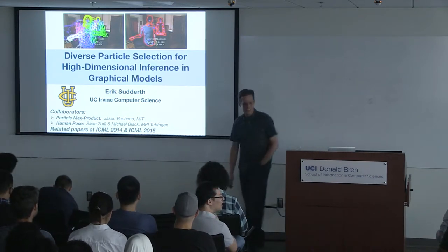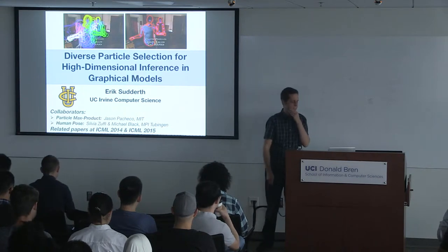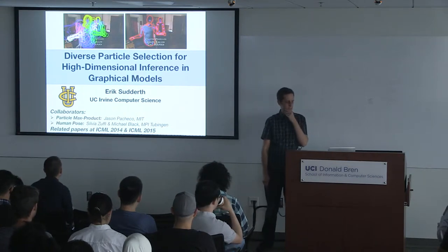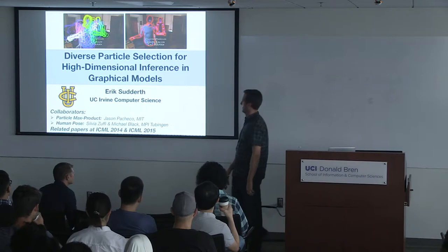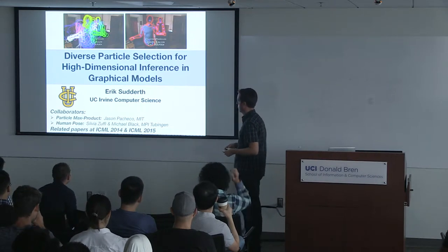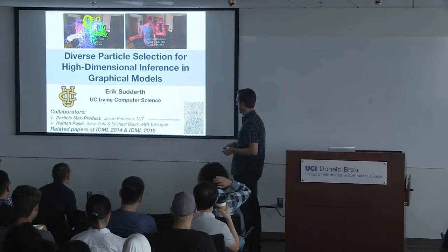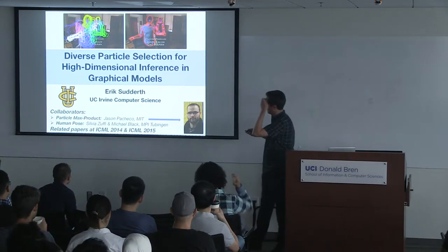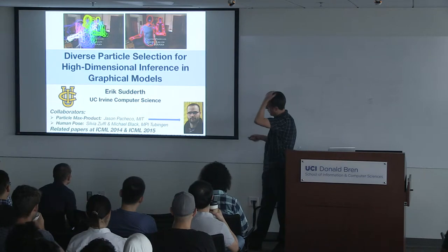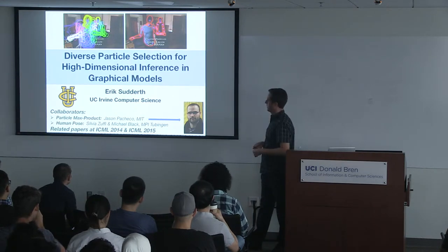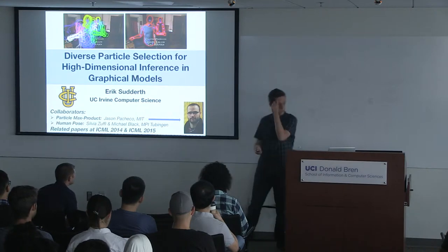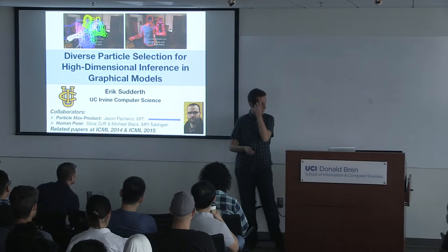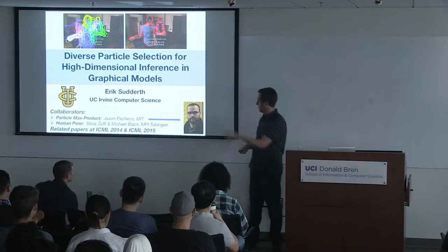Today I'm going to tell you about some work on inference in high-dimensional graphical models — statistical inference problems with high-dimensional complex structure. I want to particularly highlight the contributions of Jason Pacheco. This was a lot of the work he did for his PhD thesis at Brown University, where I was a faculty member before joining UC Irvine. He's now a postdoc at MIT.